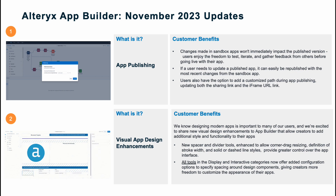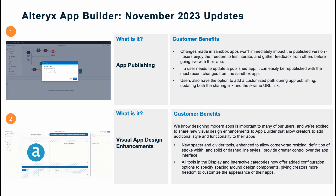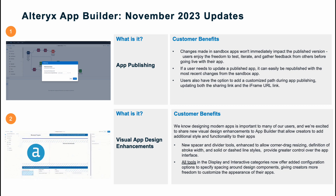First, with app publishing, now you can publish apps. Changes made in your sandbox apps won't immediately impact the published version. Now you can enjoy the freedom to test, iterate, and gather feedback from others before going live with your app. Also, if you need to update a published app, it can be easily republished with the most recent changes from your sandbox app. Finally, you do have the option to add a customized path during app publishing, updating both the sharing link and the iframe URL link.